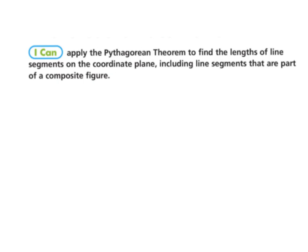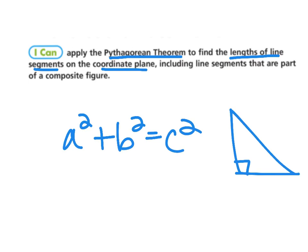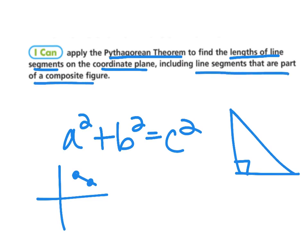Our learning goal is: I can apply the Pythagorean theorem. You guys know the Pythagorean theorem is a squared plus b squared equals c squared, and remember you can only use this for right triangles. We're going to use it to find the lengths of different line segments in the coordinate plane, including line segments that are part of a composite figure — basically finding all the sides of a shape.